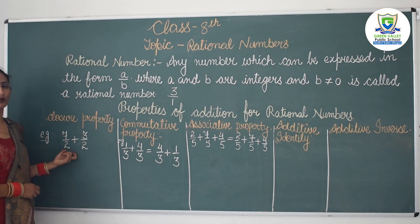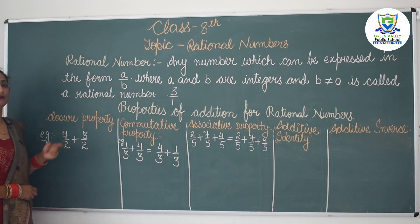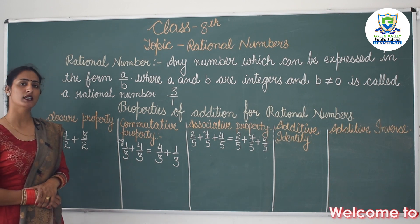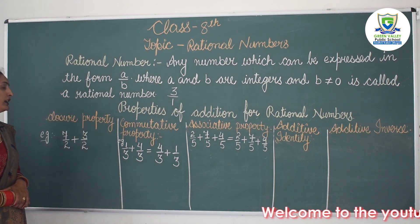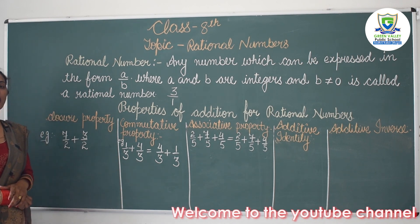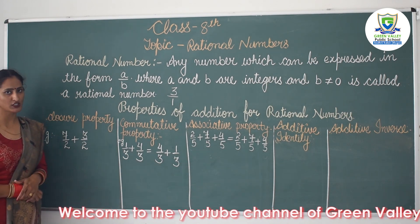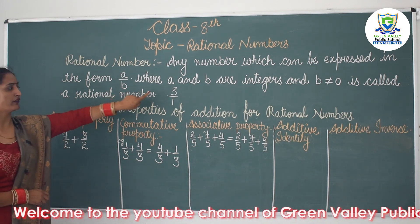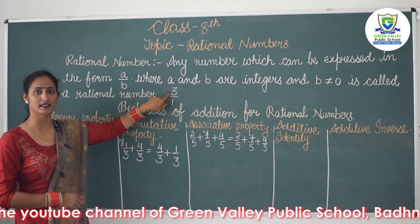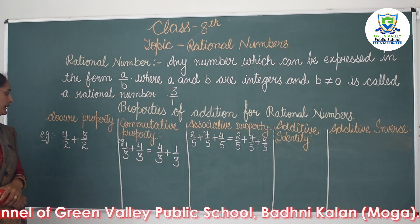Let us start with property 1, which is known as the closure property. It means the sum of two rational numbers is always a rational number. If you add any two rational numbers, the answer will always be in the form of a rational number. If any cancellation is possible, you can simplify and still express the result as a rational number.